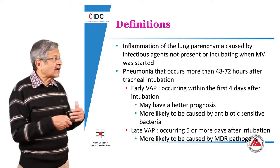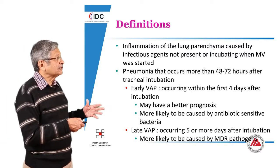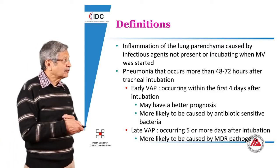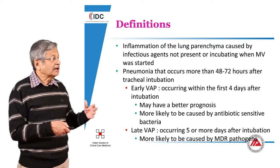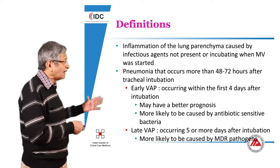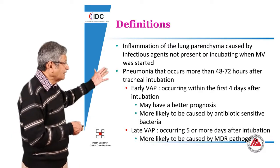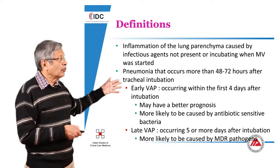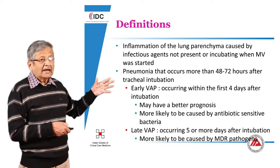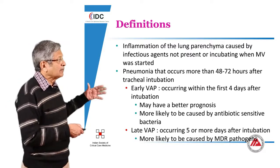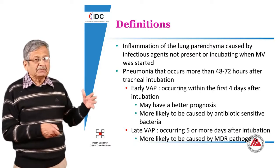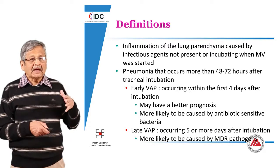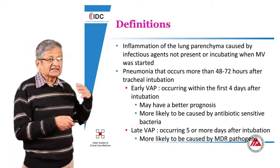They have to start off more than 48 to 72 hours after tracheal intubation. Early onset ones are those occurring within the first 4 days after intubation, and late onset ones are those occurring 5 or more days after intubation. This differentiation is made primarily because early onset VAPs are likely to have a better prognosis and are likely to involve more antibiotic-sensitive bacteria.